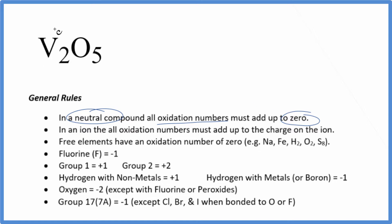We don't know what the vanadium is. That's not in our rules here, but we do know that oxygen is almost always minus two. So each one of these oxygens is minus two.